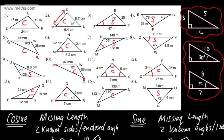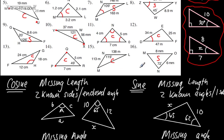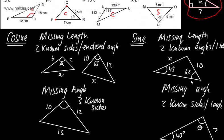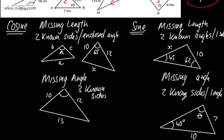In this video, we're going to look at using the sine rule to find missing lengths and angles in non-right-angle triangles. In the last video, we looked at which of the two rules we needed to use given certain situations. We had the cosine rule and the sine rule. We used the sine rule to find missing lengths when we had two known angles and one side, and to find missing angles when we had two known side lengths and one angle.